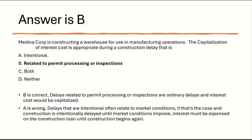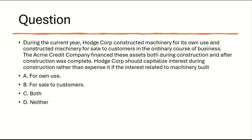You can still capitalize interest during normal construction delays, and companies would rather do that — they'd rather capitalize something than expense it. If you expense it, it hits the income statement in a negative way, whereas if you capitalize it, it stays off the income statement and goes to the balance sheet. Let's try this: during the current year, Hodge Corp constructed machinery for its own use and constructed machinery for sale to customers in the ordinary course of business. What do we call that?